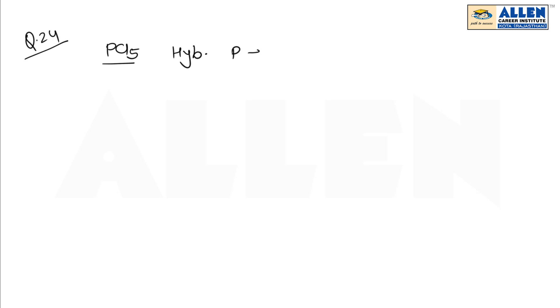Question number 24: In PCl₅, the hybridization of phosphorus is SP³D. The structure of PCl₅ is trigonal bipyramidal.